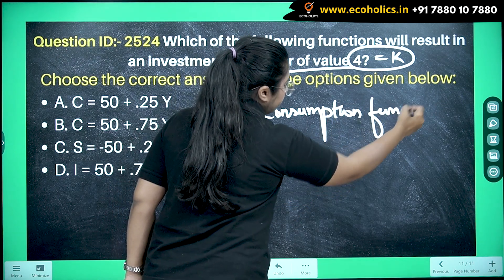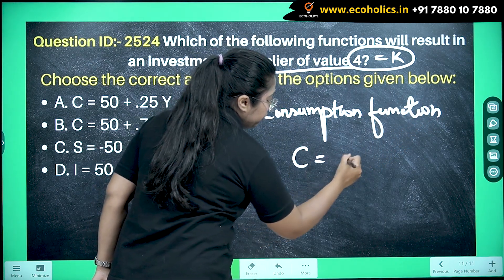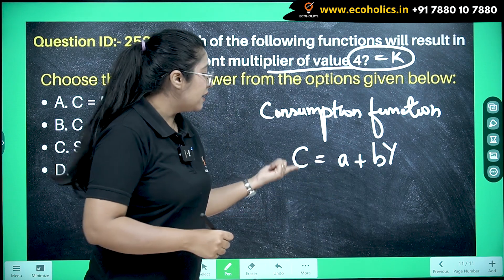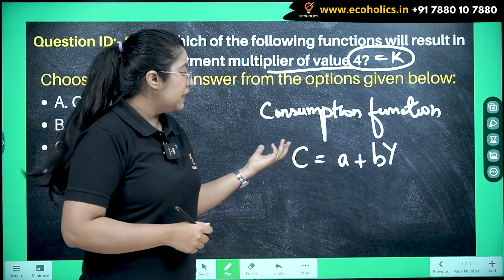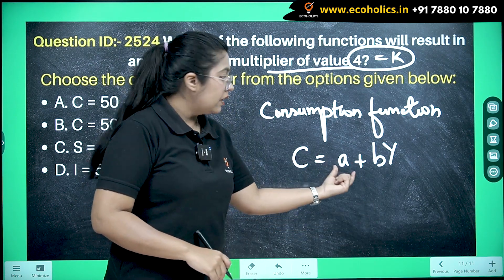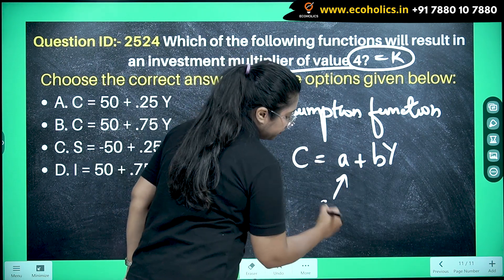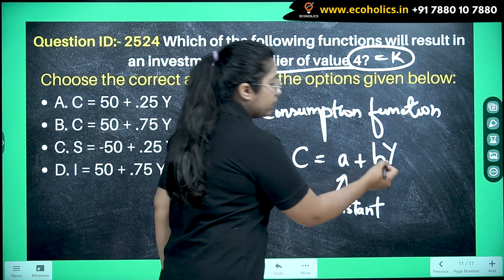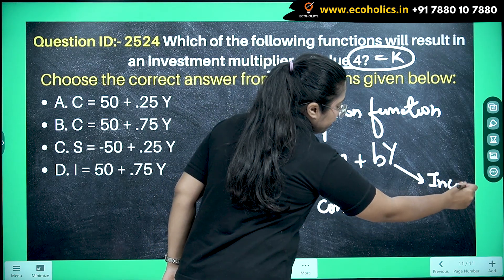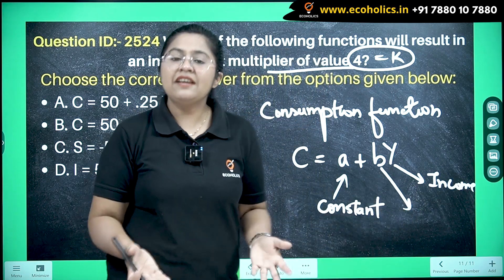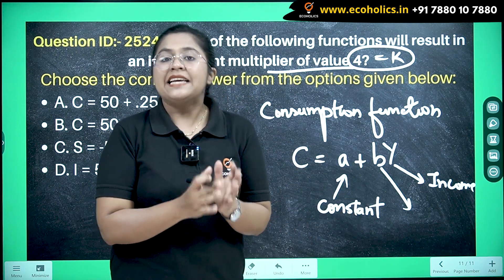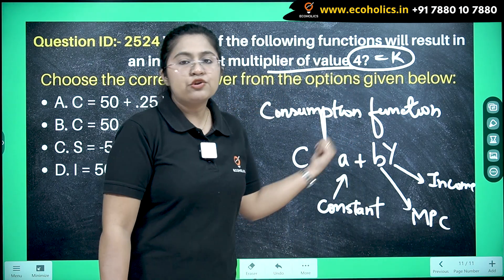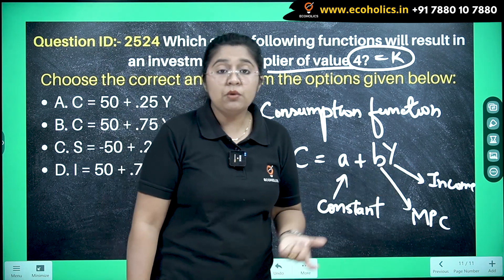The consumption function can be written as C = a + bY, where C is consumption expenditure, a is a constant — autonomous consumption — and Y is income multiplied by b. Now, b in this context is MPC, the marginal propensity to consume, according to the Keynesian formula. Consumption depends mainly on MPC and income.